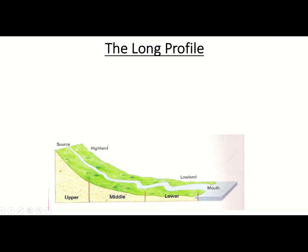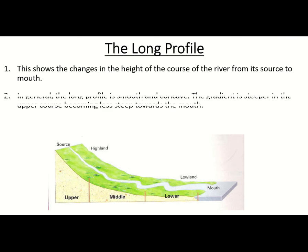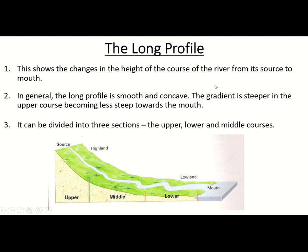When we talk about how a river's slope changes, the diagram shows that the source is at the top where it's steepest, with the most gravitational potential energy because it's highest above sea level. As you get into the middle course it gets more gently sloping, and then at the lower course it's almost flat until it reaches the sea. That's the long profile — it shows changes in height from source to mouth. It's generally smooth and concave, with a gradient steeper in the upper course becoming less steep towards the mouth, divided into upper, middle and lower sections.